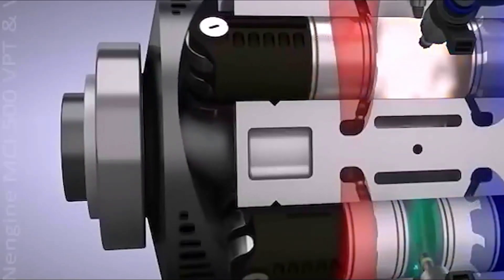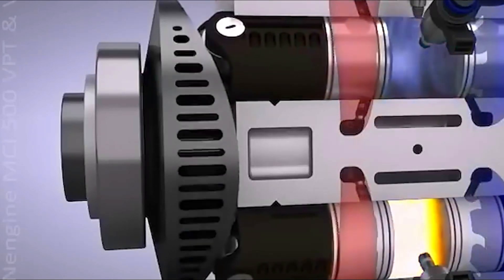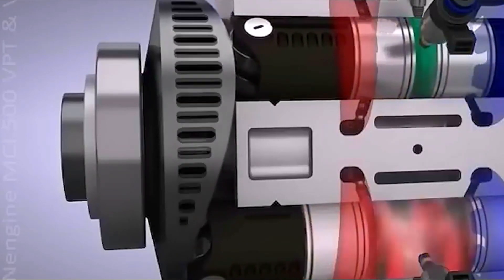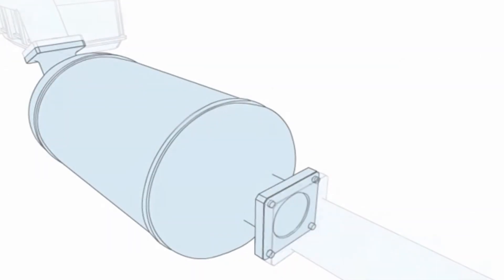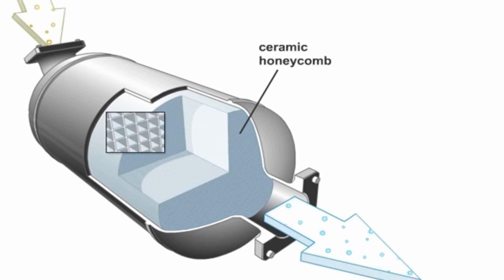However, even in cases where forced induction is not employed, it becomes challenging to prevent oxygen from exiting the cylinder along with the exhaust gases. As a result, the traditional three-way catalytic converter, commonly used in gasoline engines to reduce emissions, may become less effective due to the presence of oxygen in the exhaust stream.